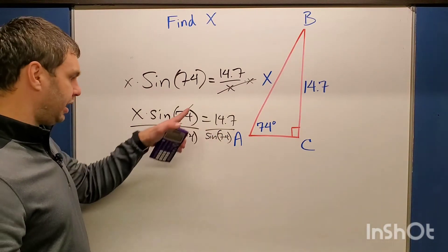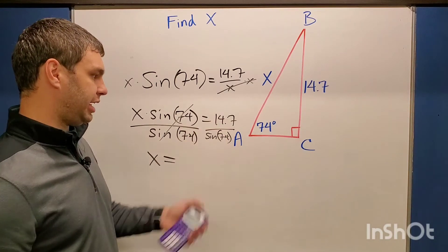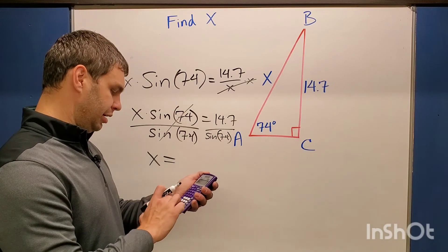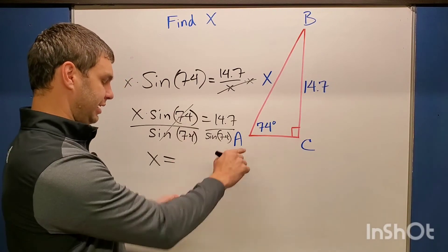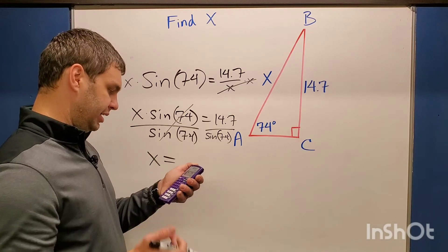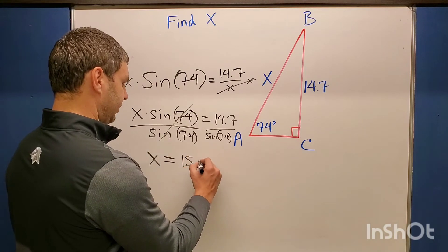Once that's canceled on the left side, that leaves me with just X equals. And on the other side, I can type this in the calculator exactly like it looks. 14.7 divided by sine of 74, and this gives me 15.29.